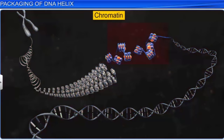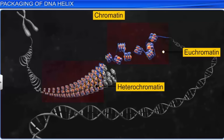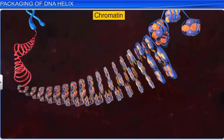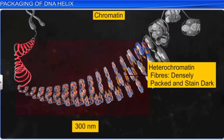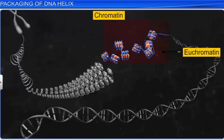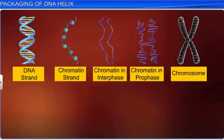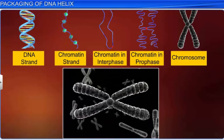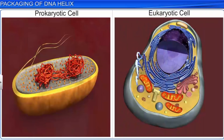The chromatin fibers are of two types: euchromatin and heterochromatin. In a typical nucleus, euchromatin fibers of 30 to 80 nanometers in diameter are loosely packed and stain light. On the other hand, heterochromatin fibers of about 300 nanometers in diameter are more densely packed and stain dark. Of the two types, euchromatin is transcriptionally active, while heterochromatin is inactive. These chromatin fibers coil further and condense to form short and thick bodies called chromosomes during the metaphase stage of cell division. In this way, a DNA double helix is packaged into a chromosome, which is further packaged within the nucleus.